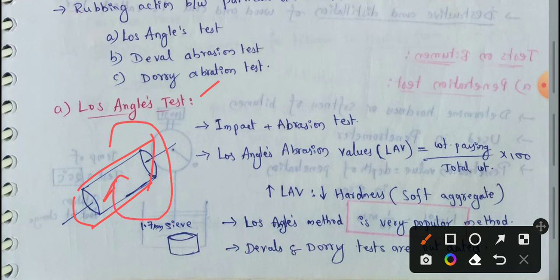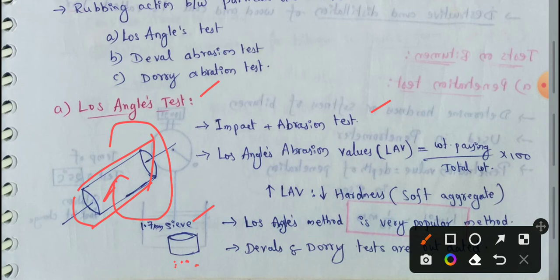We keep an impact/attrition effect during this rotation. After completing the required number of revolutions, the specimen is sieved. The weight passing through a 1.7 mm sieve is recorded, and this automatically gives us the Los Angeles abrasion value.